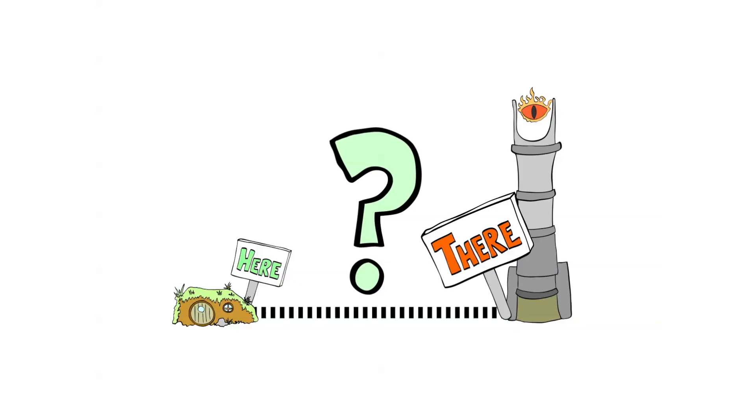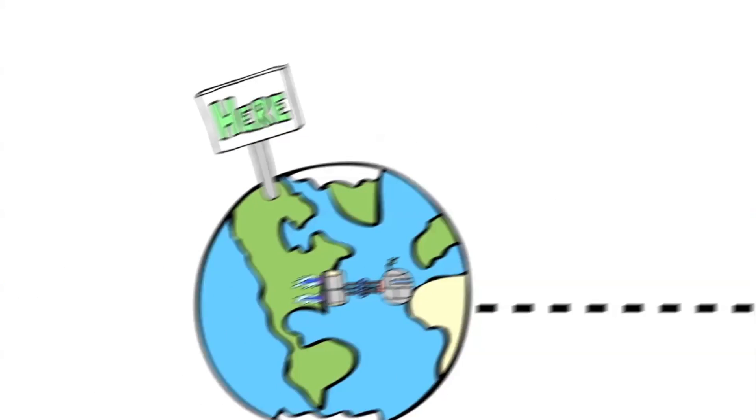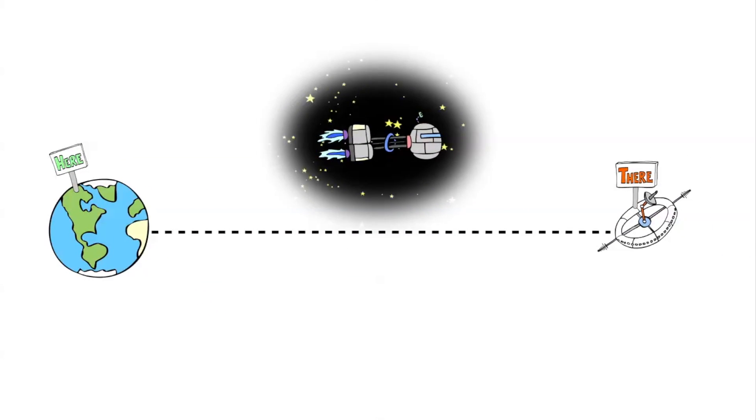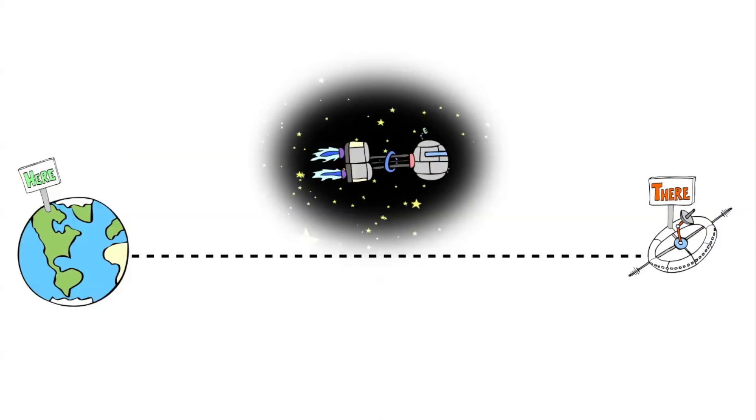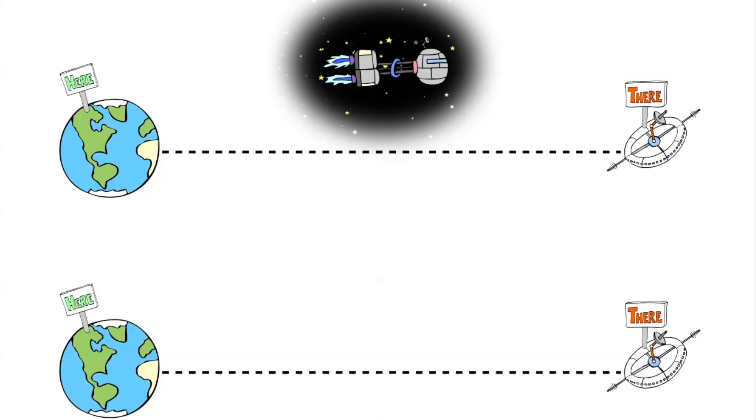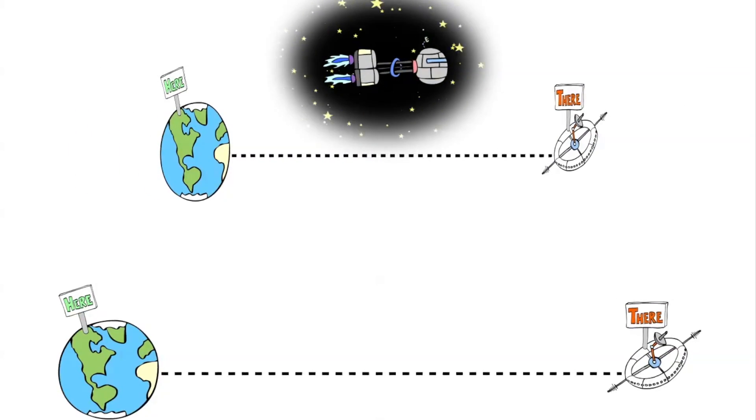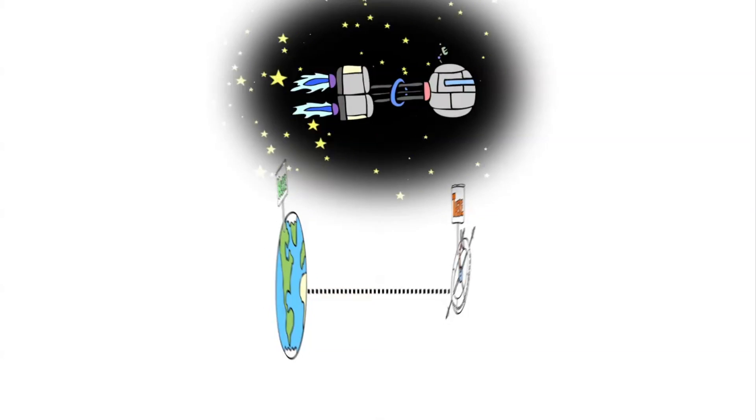But what exactly separates here from there? We've known since Einstein that the distance between two objects depends on who you ask. An observer moving at close to the speed of light, and one standing still, will disagree about how far apart two points in space are. As you get closer to the speed of light, distance shrinks, and here and there get closer to becoming just the same place.